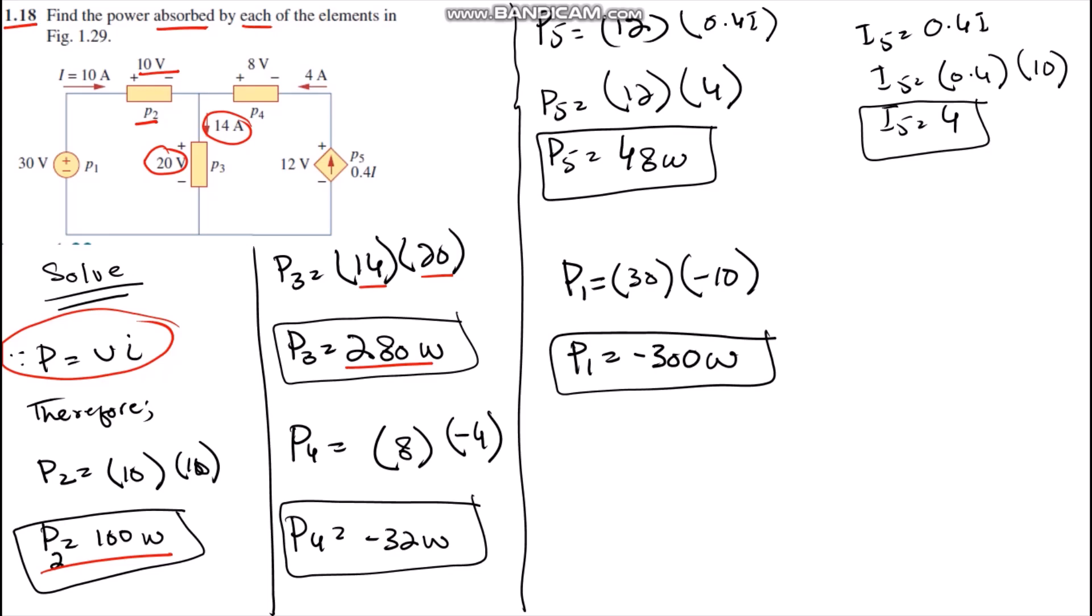For P4, the voltage of element 4 is 8 volts and the current is negative because it is entering from the negative side. Therefore, we get P4 equals minus 32 watts.